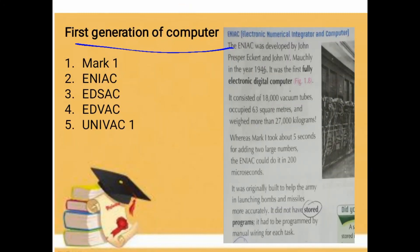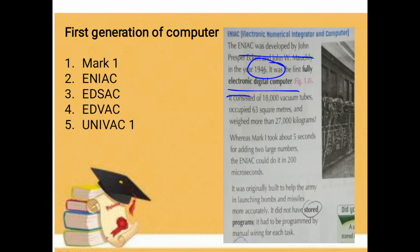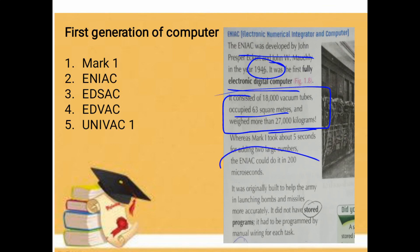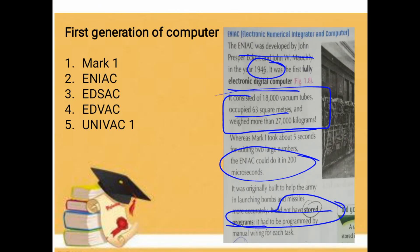To summarize: ENIAC was developed by John Presper and John W. Mauchly in 1946. It was the first electronic digital computer. It consisted of 18,000 vacuum tubes, occupied 63 square meters, and weighed over 27,000 kilograms. It performed addition in 200 microseconds, was built for the army, and did not have a stored program.